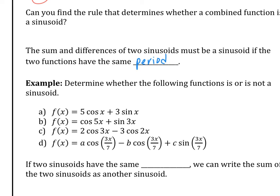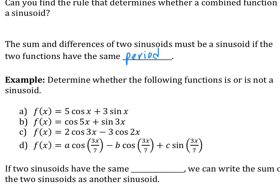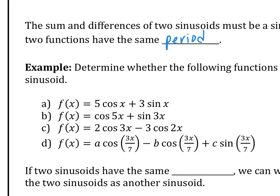Okay, so now, A, B, C, D, you have to determine whether it is or is not a sinusoid. Which one is a sinusoid, which one is not a sinusoid? Okay, is A a sinusoid? Yes. B? No. C? No. D? Yes. Good.